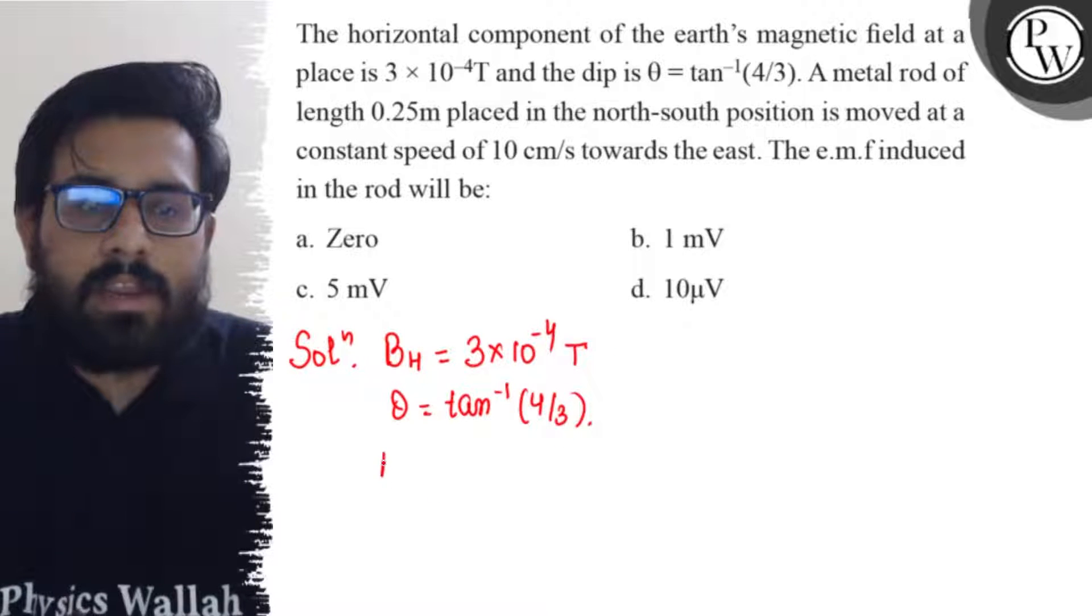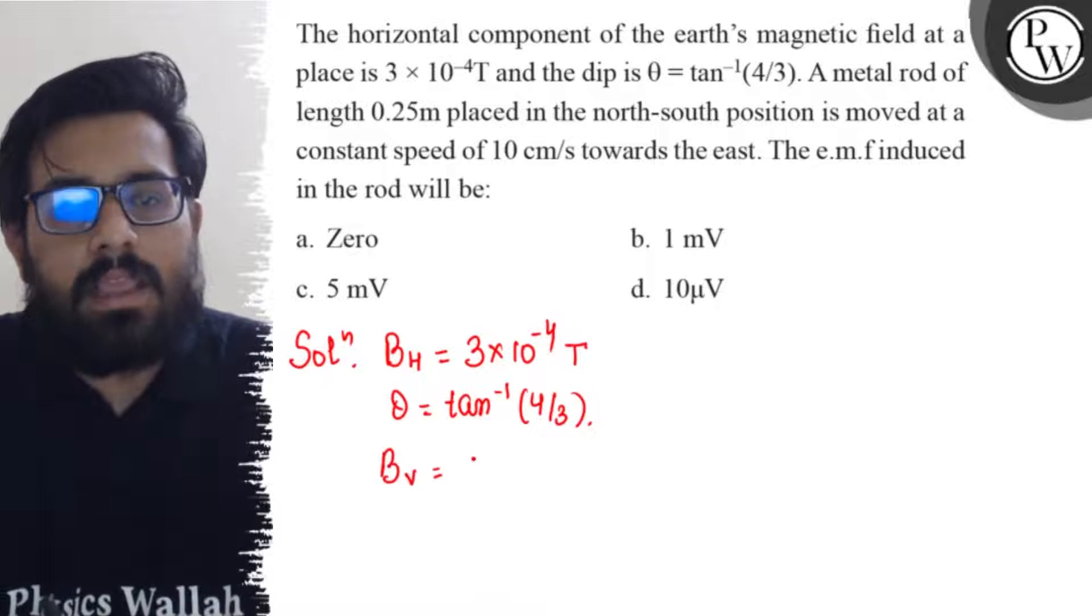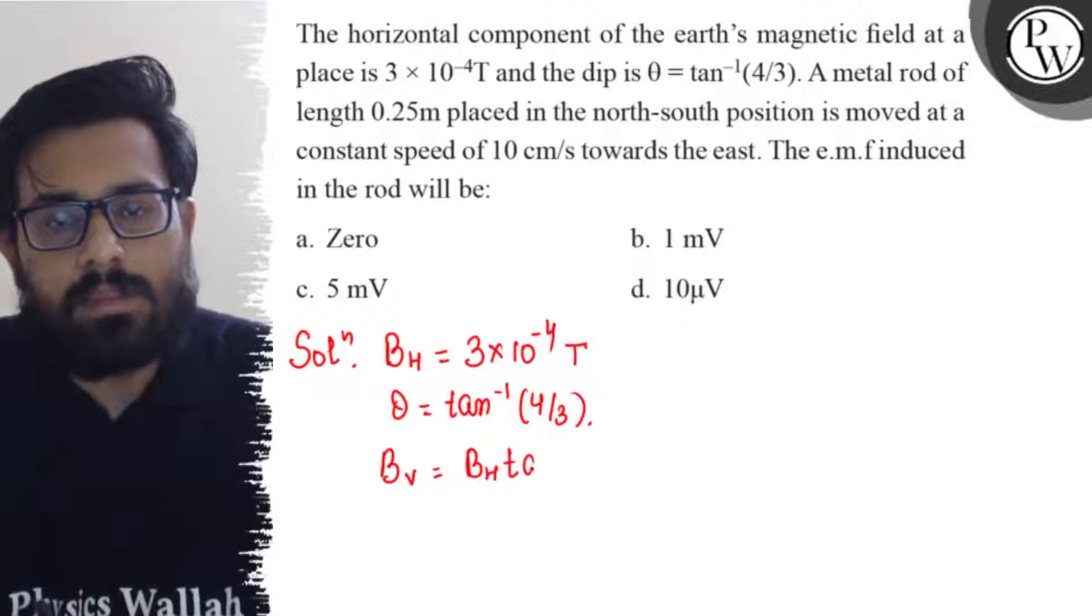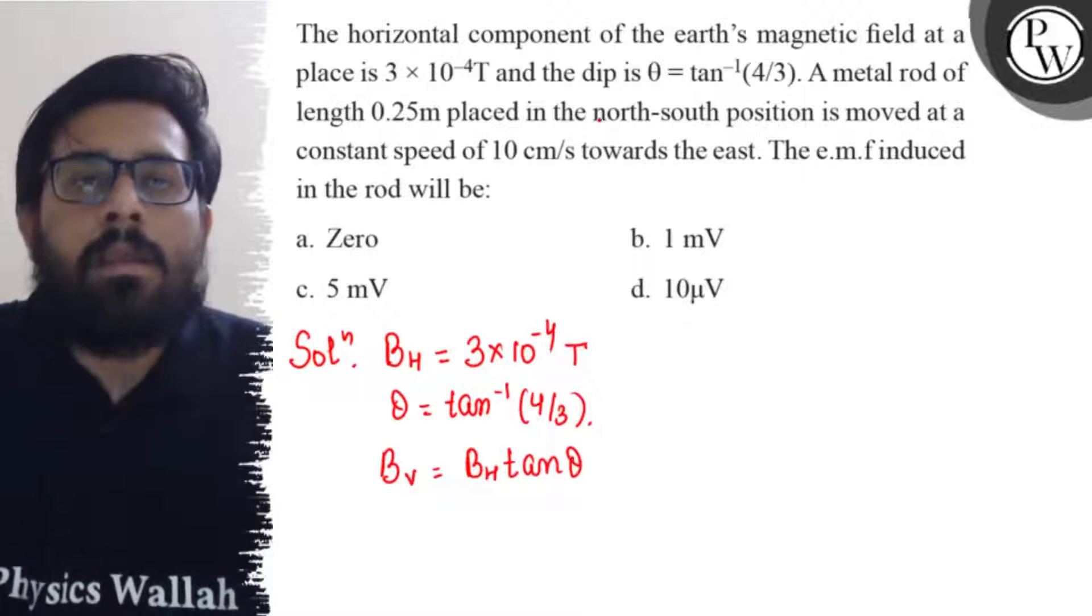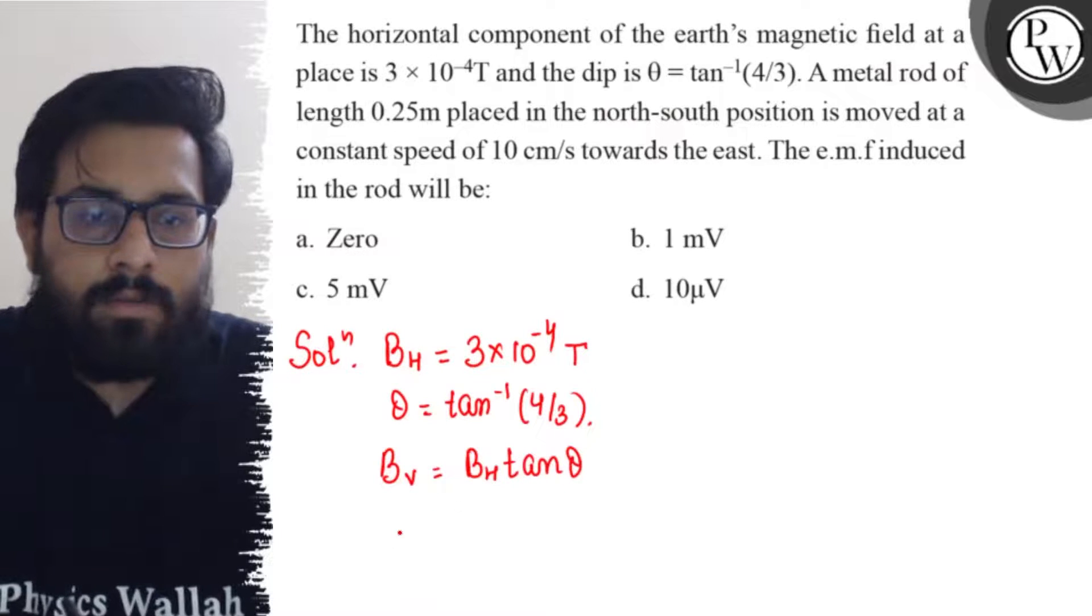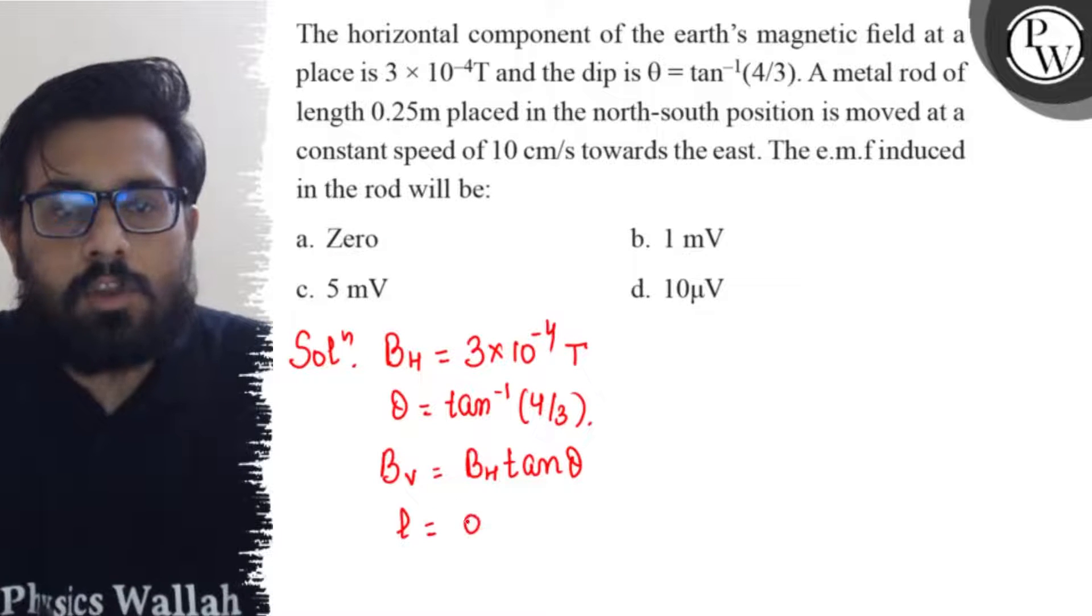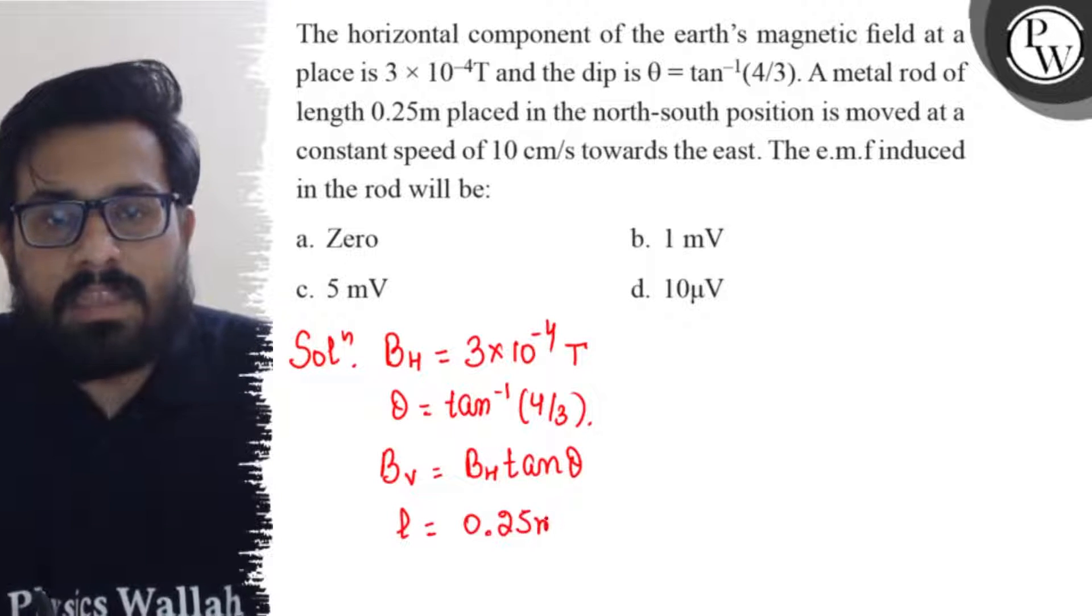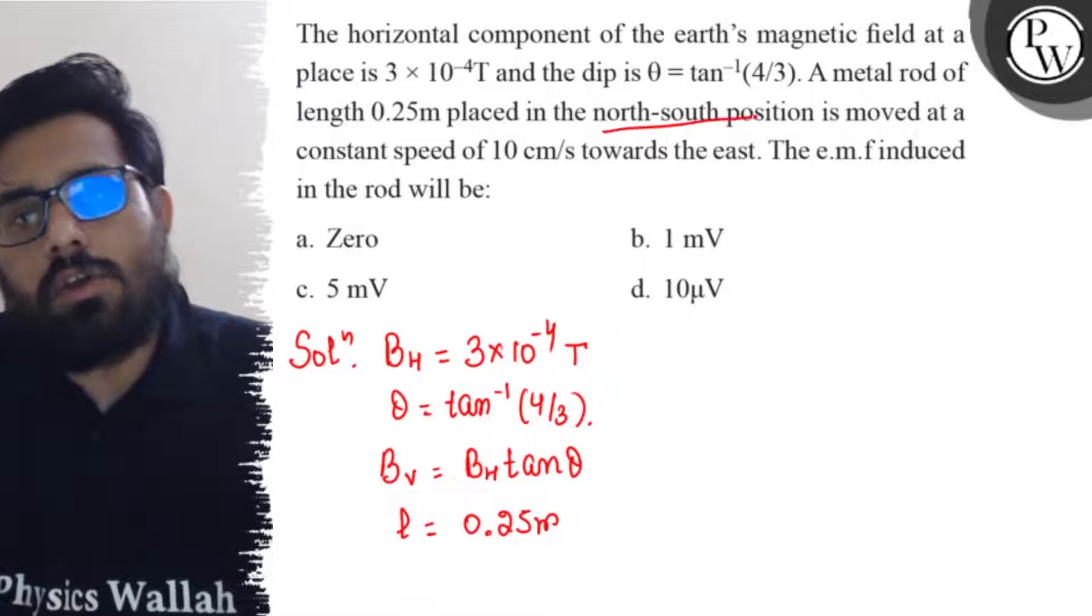So we know that BV can be written as BH tan theta. We know this relation, and when a metallic rod having the length of 0.25 meter is placed in the north-south position.